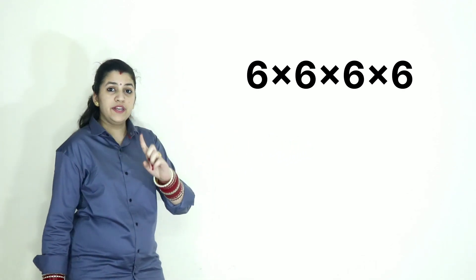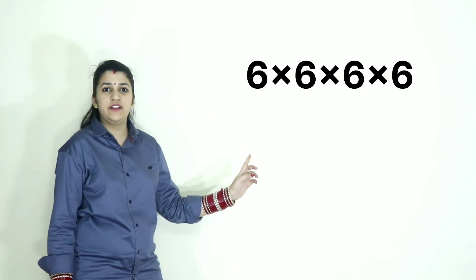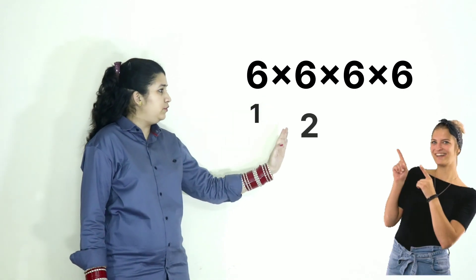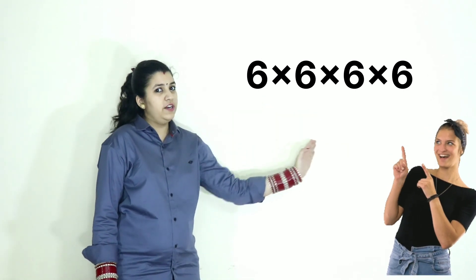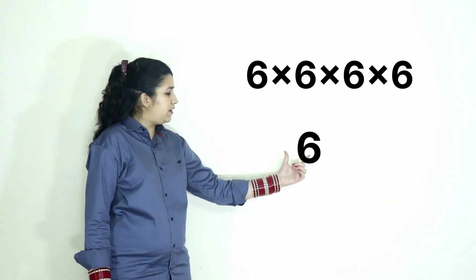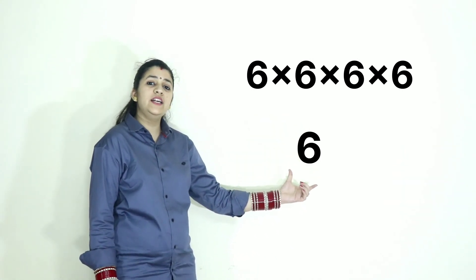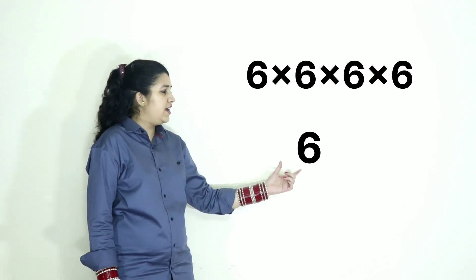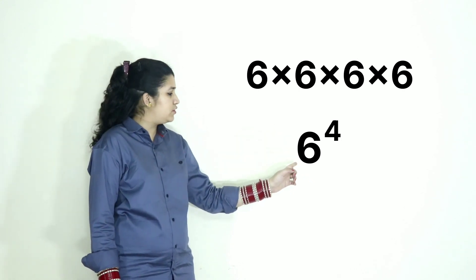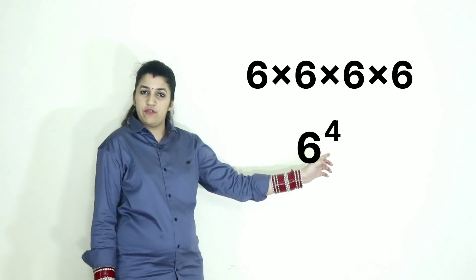So what do you have to do? How many times has 6 been written here? It is 1, 2, 3, 4. So write this number 6 as the base. We call this the base number. So 6. And how many times? 4 times. So 6 raised to the power 4.